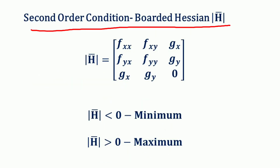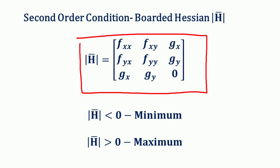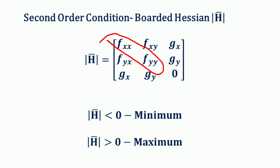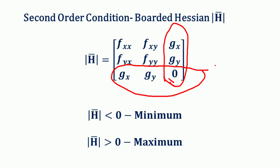The Bordered Hessian can be used to find the second-order condition for optimization of a multivariable function — to check whether the function is maximized or minimized. It is a determinant composed of all the second-order partial derivatives, with second-order direct partial derivatives f_xx and f_yy on the principal diagonal, second-order cross partial derivatives f_xy and f_yx off the principal diagonal, bordered by the first derivatives of the constraint with 0 on the principal diagonal.